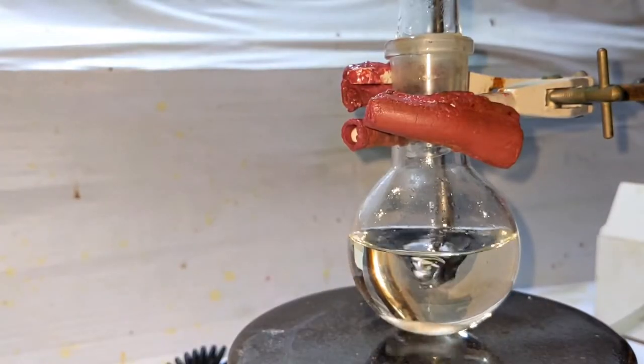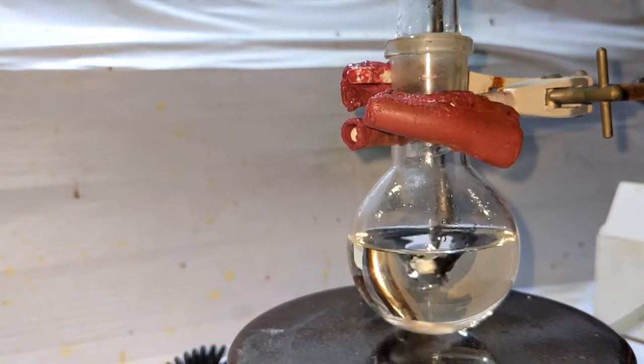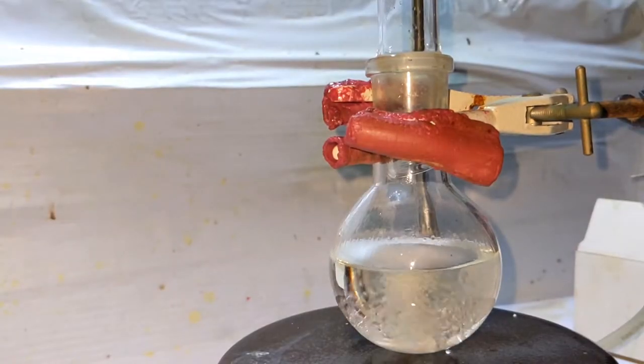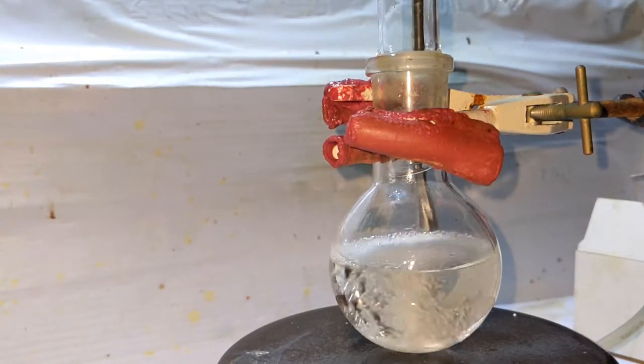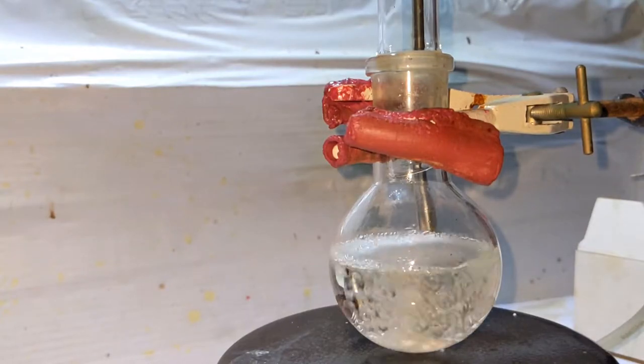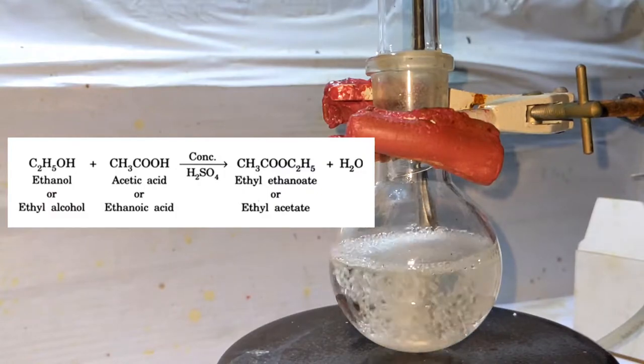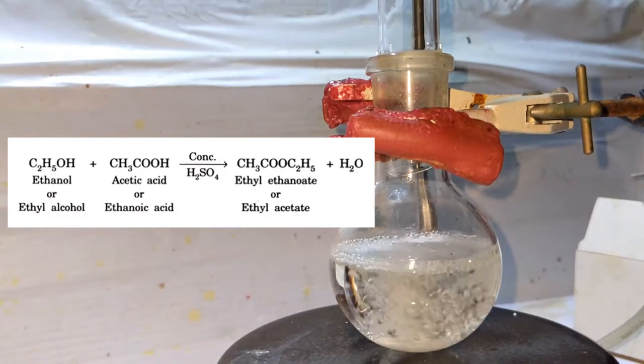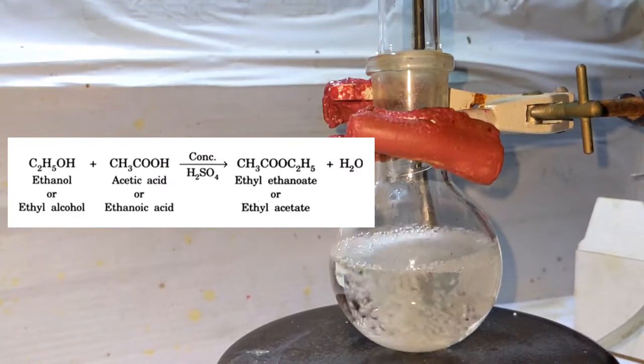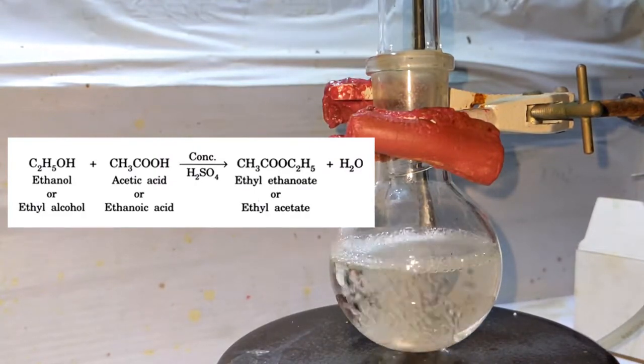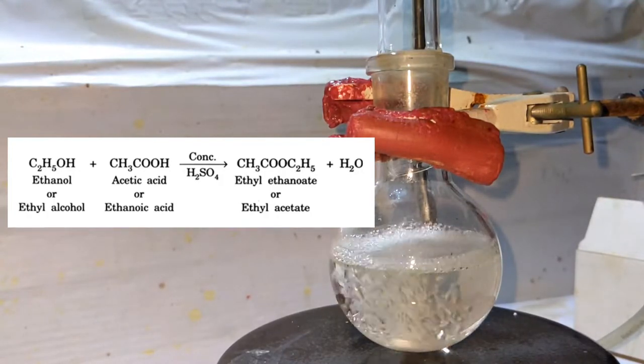Now a reflux condenser is attached on top of the flask and the mixture is refluxed for 30 minutes at around 90 degrees Celsius. Let us see what is happening here. It is the Fischer esterification process where the carboxylic acid in the presence of alcohol and a strong acid catalyst forms ester along with water as the byproduct. Here, acetic acid and ethanol form ethyl acetate.